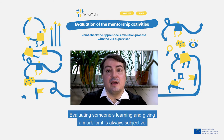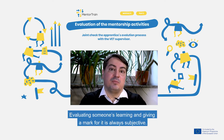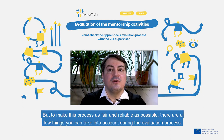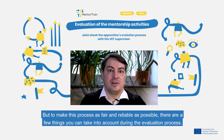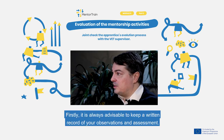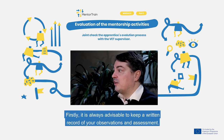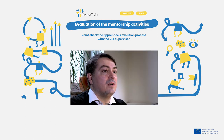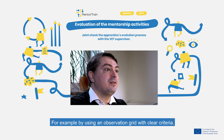Evaluating someone's learning and giving a mark for it is always subjective. But to make this process as fair and reliable as possible, there are a few things you can take into account. Firstly, it is always advisable to keep a written record of your observations and assessments — for example, by using an observation grid with clear criteria.